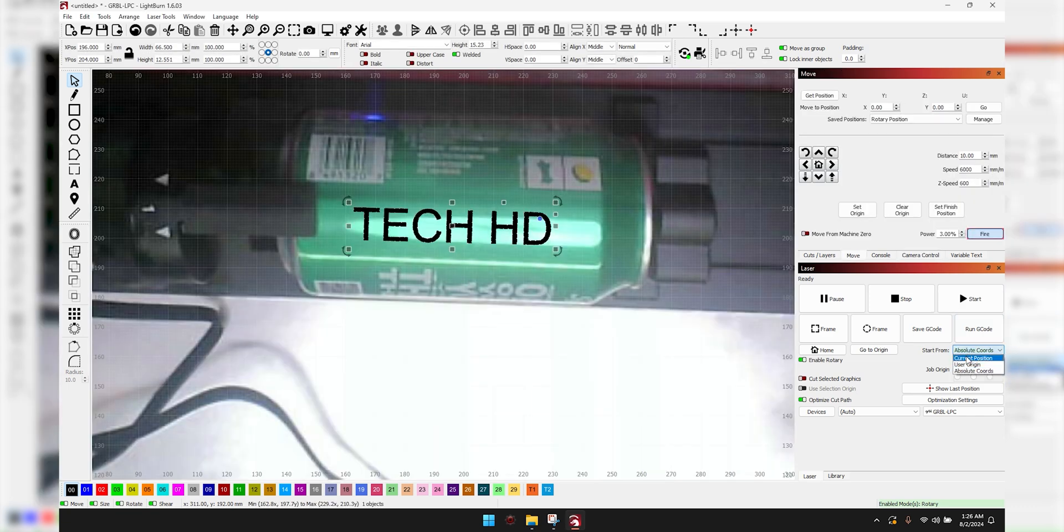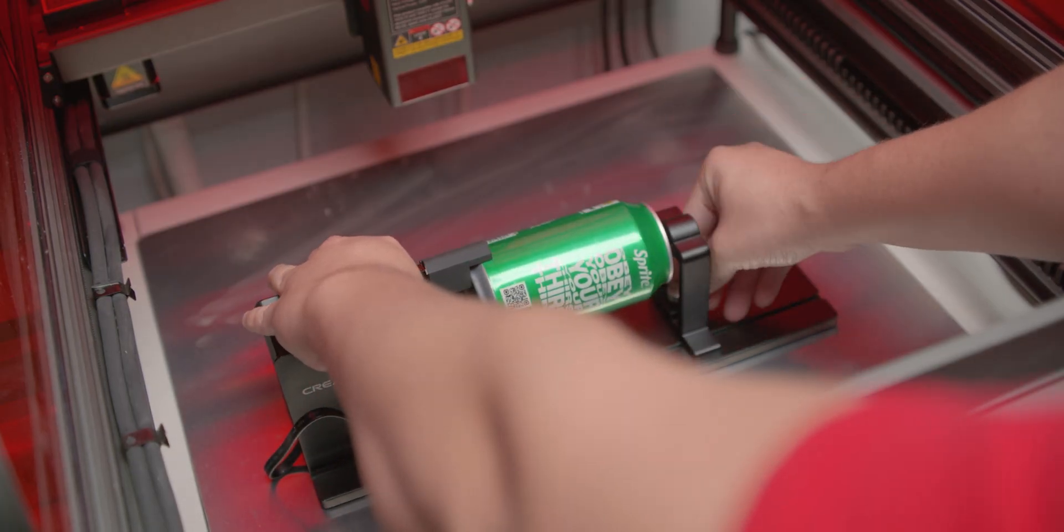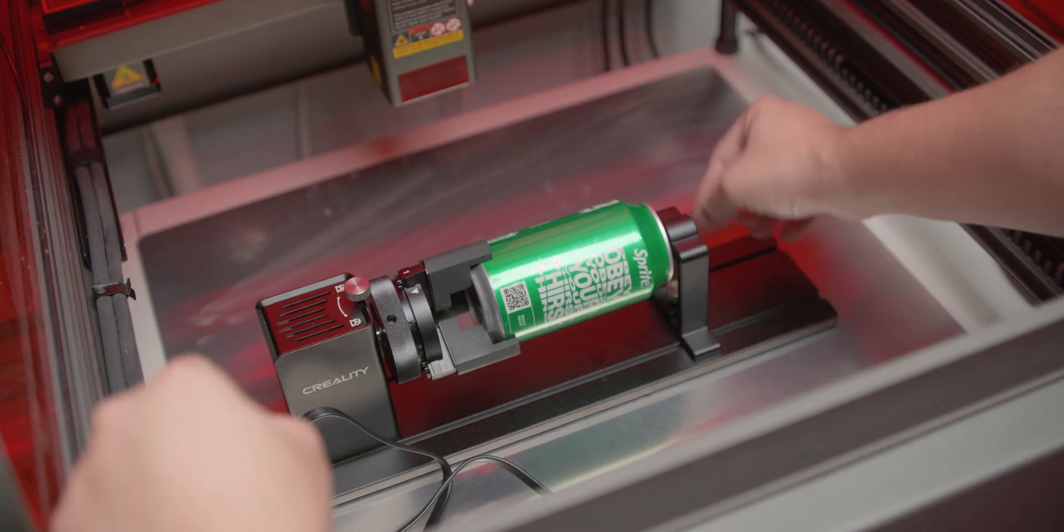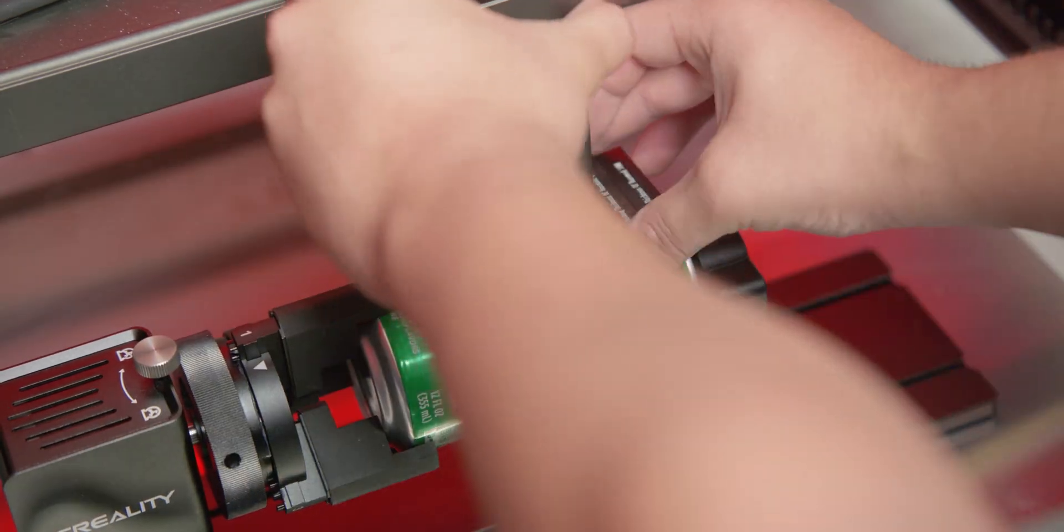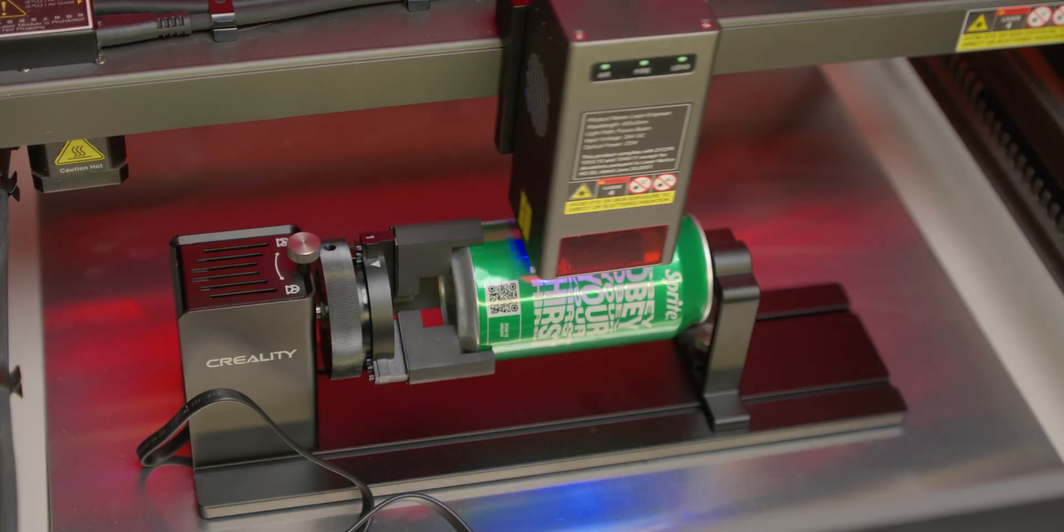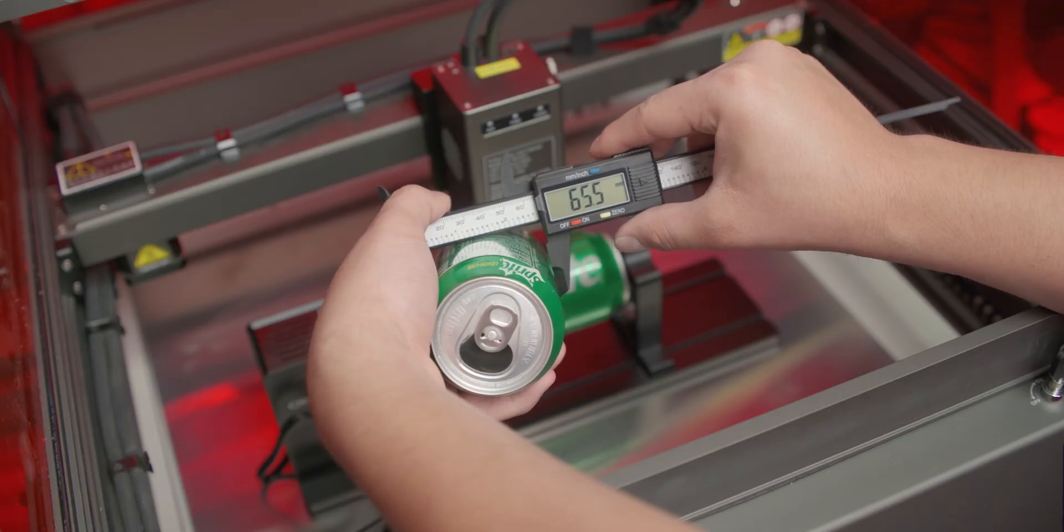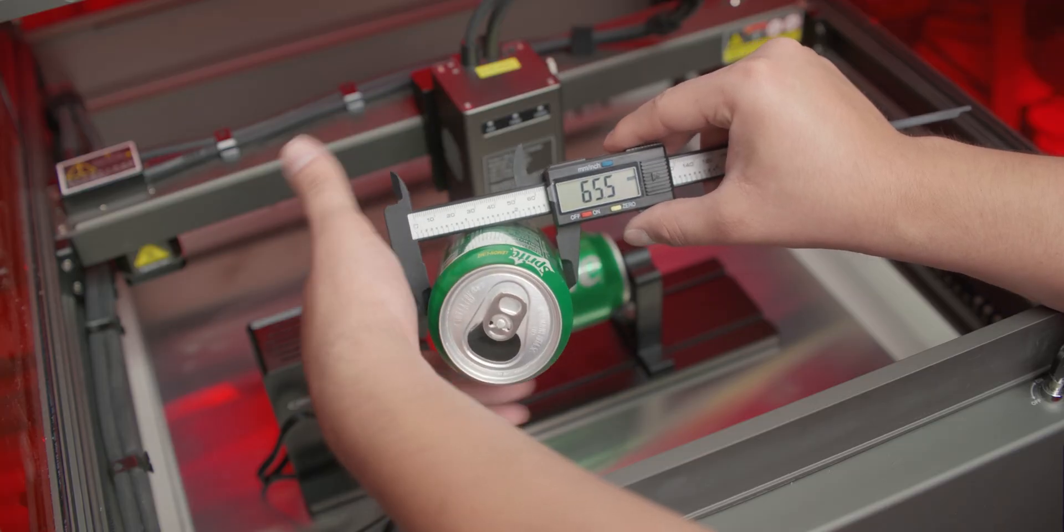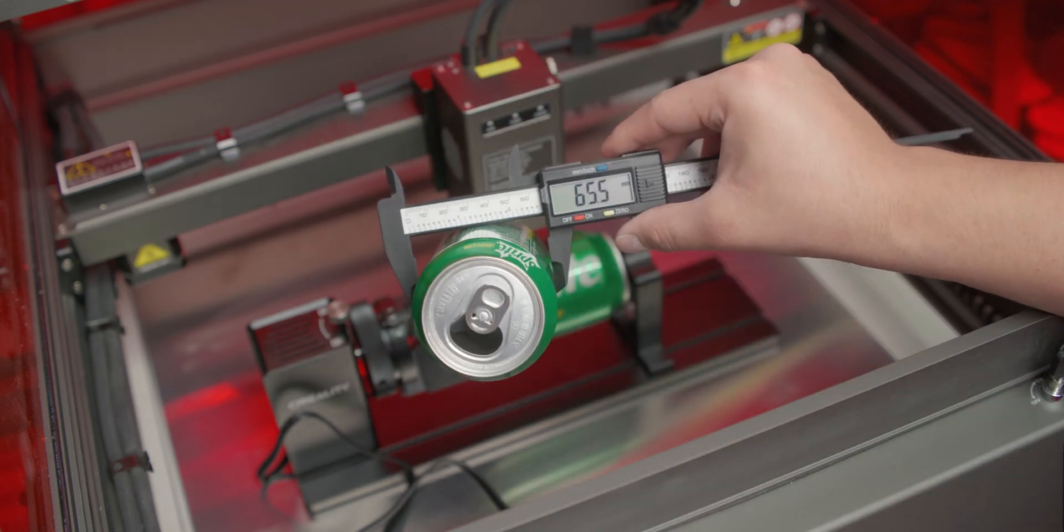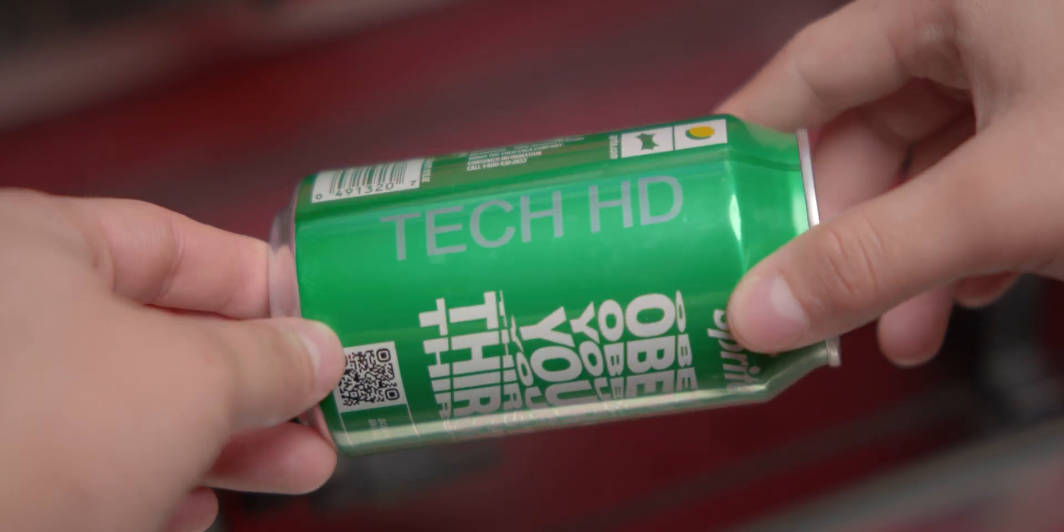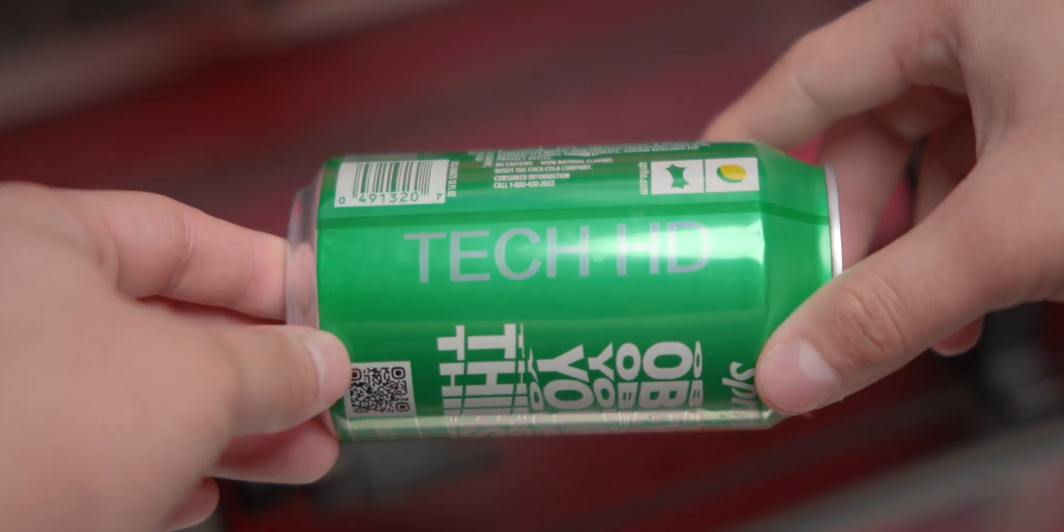Lastly you'll want your 'start from' set to current position, and it depends on you for the job origin. Now you're all set to use the rotary kit pro. For this I practiced first on some soda cans to get used to the settings. I got the can clamped on, leveled the laser to the can, made sure it wouldn't hit anything, framed where it would begin, measured the circumference using either a tape measure or calipers, and put that into the Lightburn software. I engraved some simple text and it worked out great.